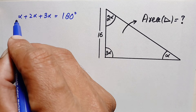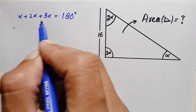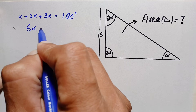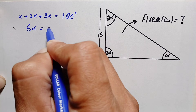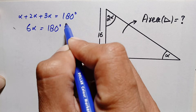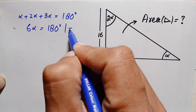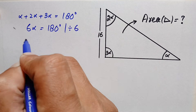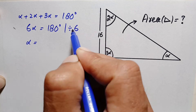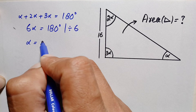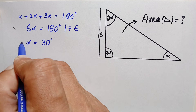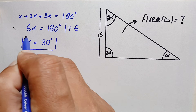Summing the three terms: alpha + 2 alpha + 3 alpha gives 6 alpha, so 6 alpha equals 180 degrees. Dividing both sides by 6, we get alpha equals 180 divided by 6, which is 30 degrees.